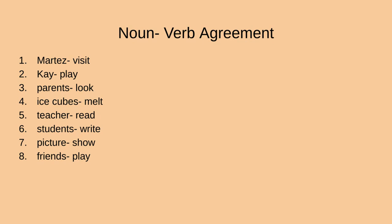Number three: parents and look. Would it be 'her parents look out the window' or 'her parents looks out the window'? We don't need to add the letter S to the end of look because we have more than one parent. Parents is our plural word, so it would be: her parents look out the window. Number four: 'The ice cubes melt in the glass' or 'the ice cubes melts in the glass'? You're right — the ice cubes melt, because there's more than one ice cube, so we don't need to add the S.